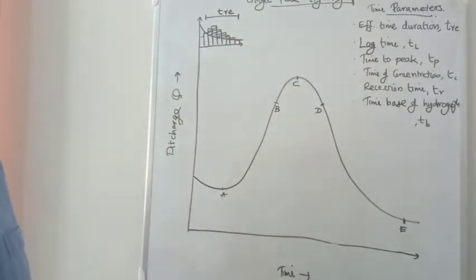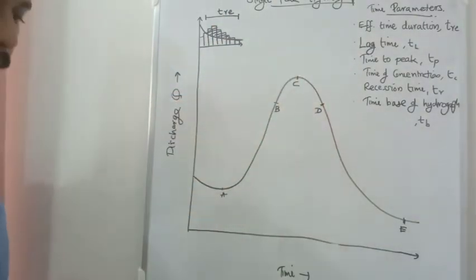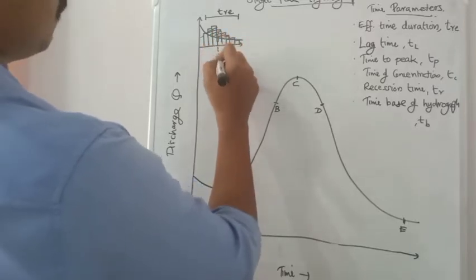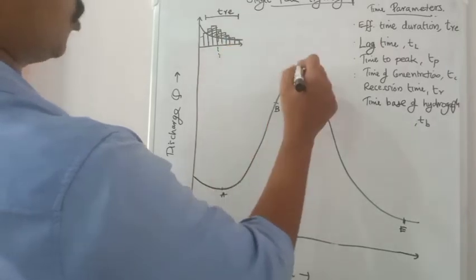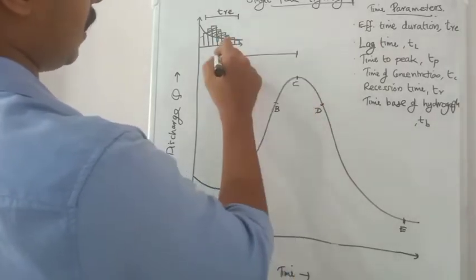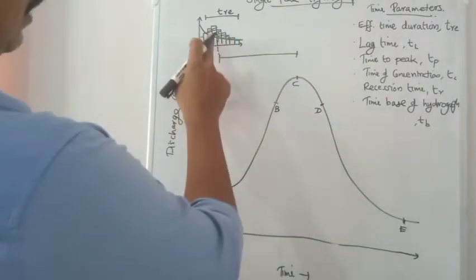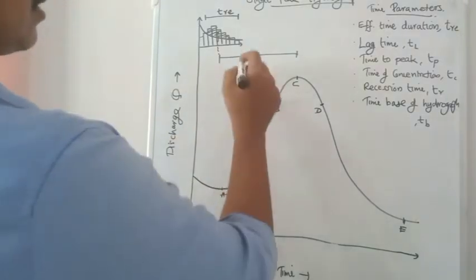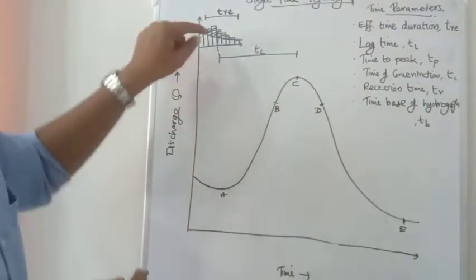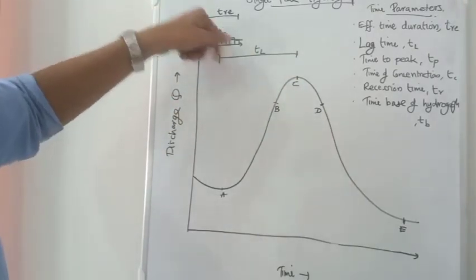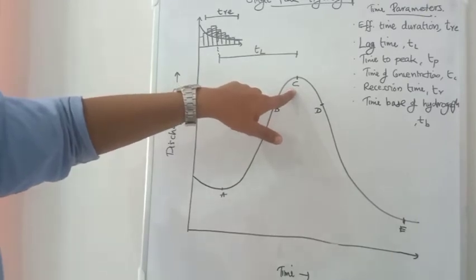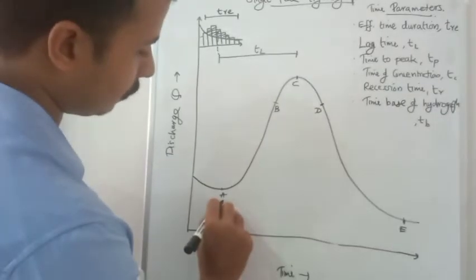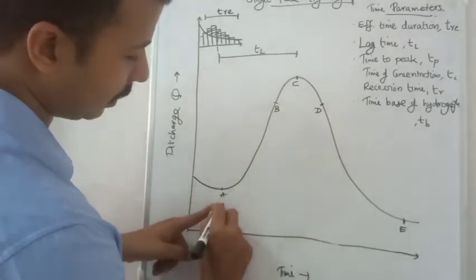So TRE is the effective time duration. Next is lag time. Lag time is the time difference between the center of mass of effective rainfall and the center of mass of the hydrograph. The center of the effective rainfall duration is the peak. The duration to the peak is the time lag. TRE is the time to peak — this 'a' is the time lag.